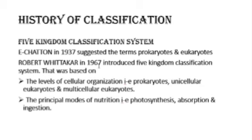After defining prokaryotes and eukaryotes, Robert Whittaker in 1967 introduced the five kingdom classification system. This system was based on two criteria: the level of cellular organization — whether organisms were prokaryotic, unicellular eukaryotic, or multicellular eukaryotic — and the mode of nutrition, whether they prepare, absorb, or ingest their food.